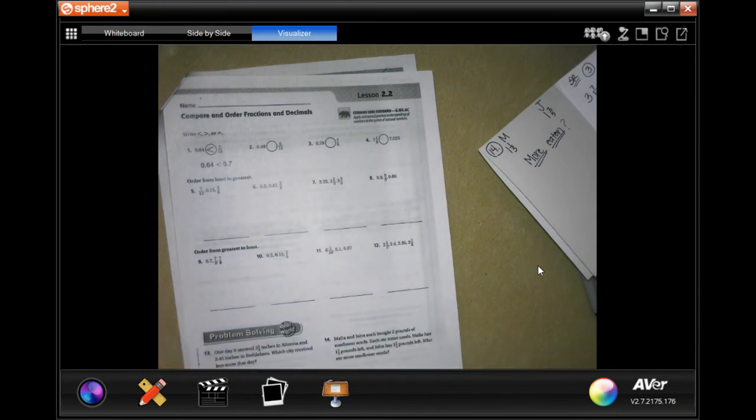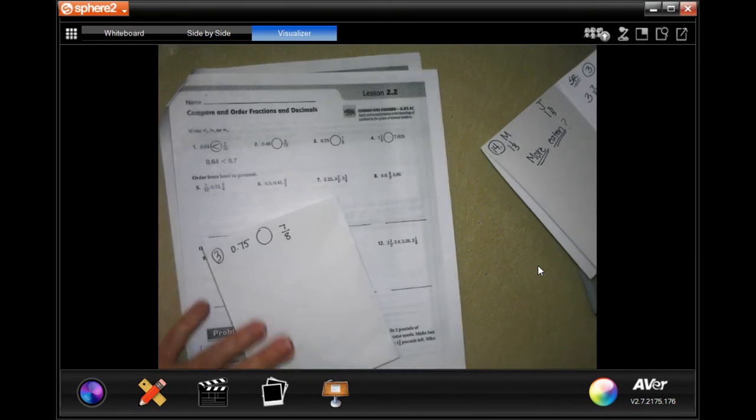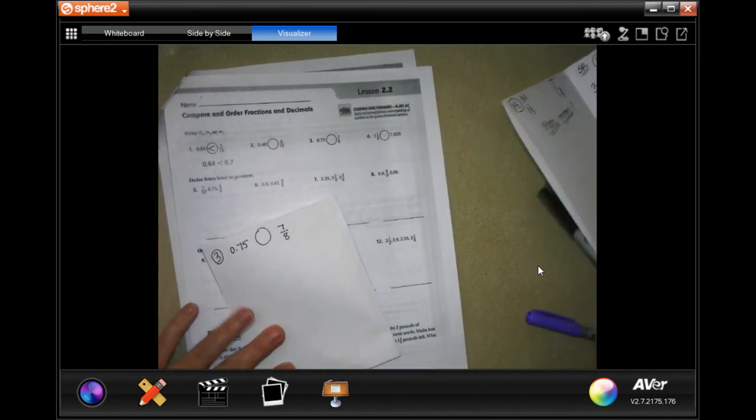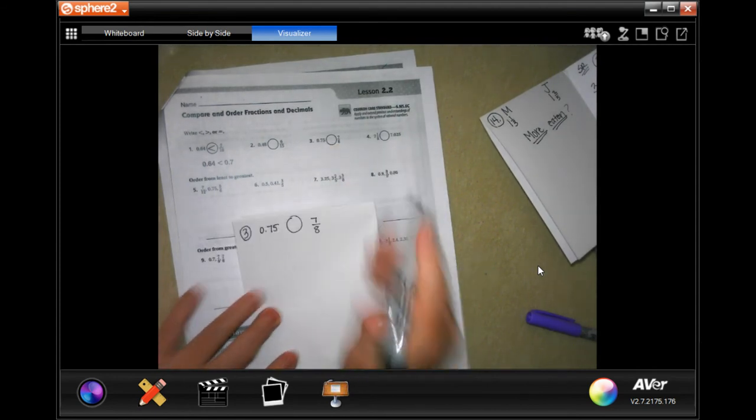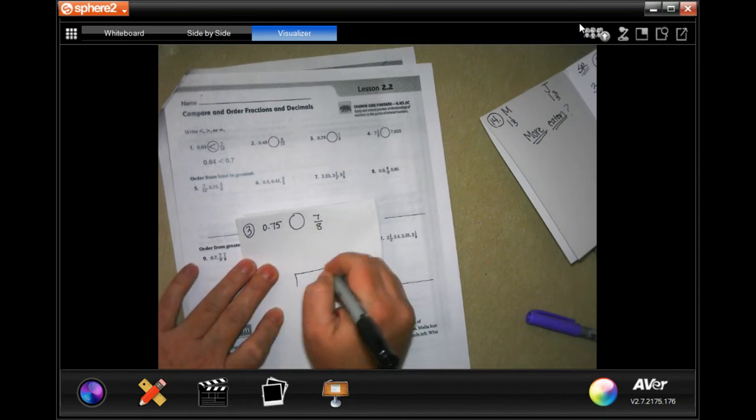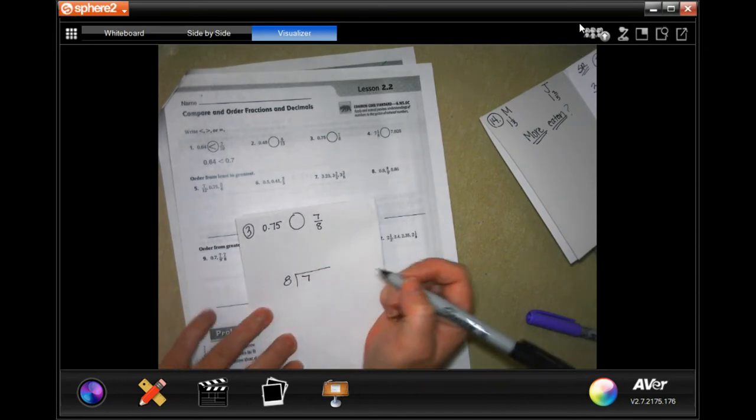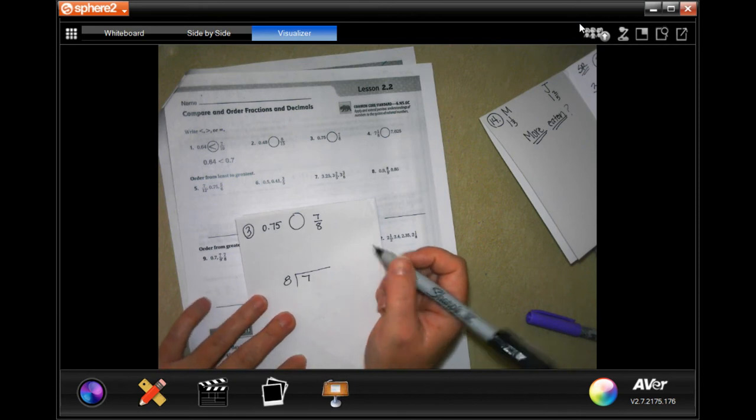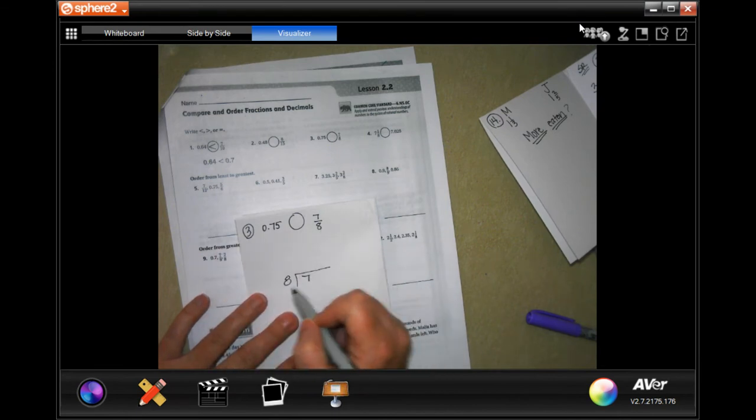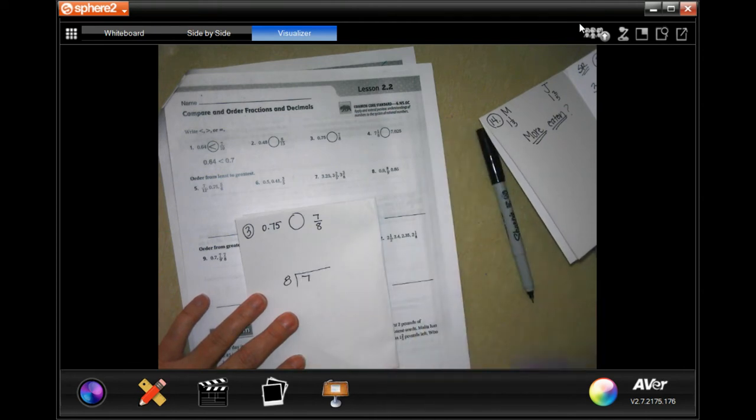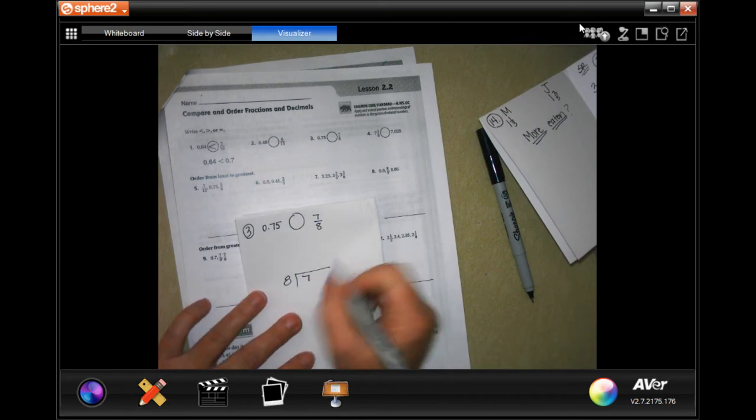We're going to go ahead and do number 3. Number 3 says 0.75 or 7/8. So I'm going to take that 7/8, the 7 goes inside, the 8 goes outside. How to remember that is 8 over 8 is one whole. So you have less than one whole here. If I did 7 into 8, then I would have a 1. So that can't be right. So that means that the top number goes inside the box.